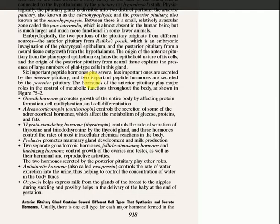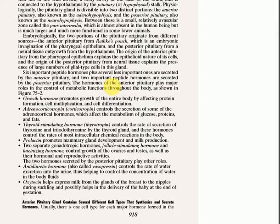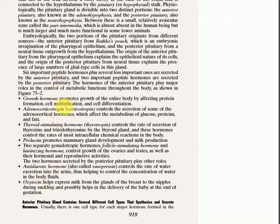Six important types of peptide hormones are secreted by the anterior pituitary gland, and two important peptide hormones are released by the posterior pituitary gland. These are not actually secreted by the posterior pituitary gland but are released by the nerve endings in the hypothalamus; the posterior pituitary stores them temporarily and then secretes them when needed. The six anterior hormones are: growth hormone, adrenocorticotropin hormone, thyroid stimulating hormone, prolactin, and two gonadotropins. The two posterior hormones are antidiuretic hormone (ADH) and oxytocin.